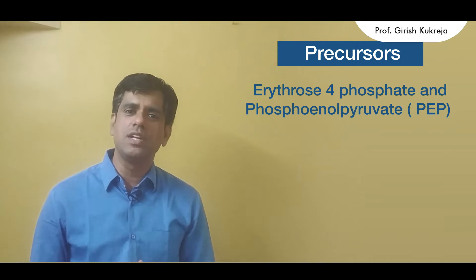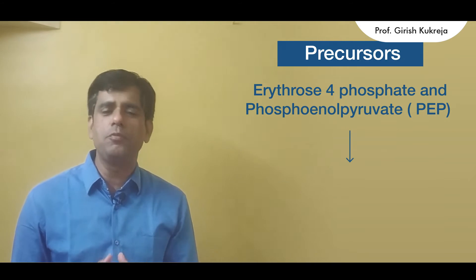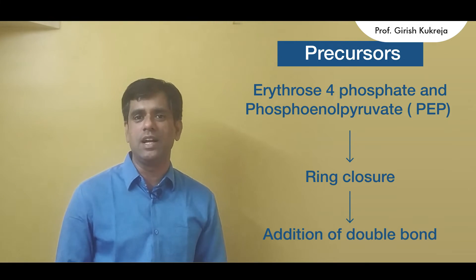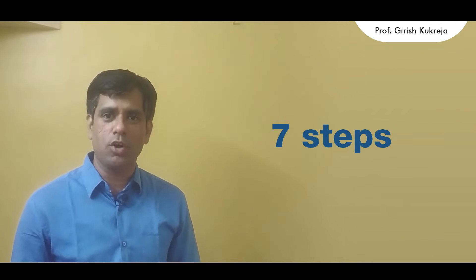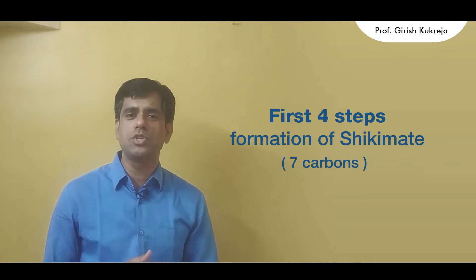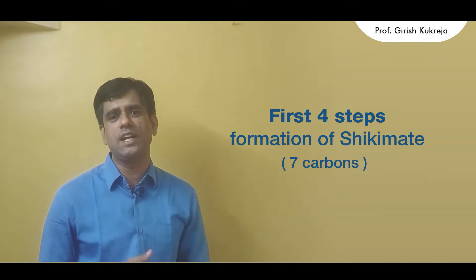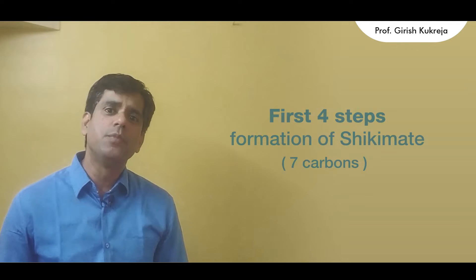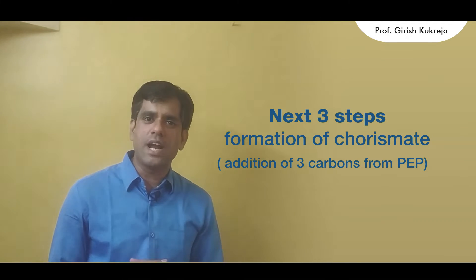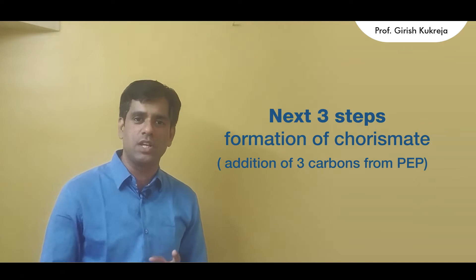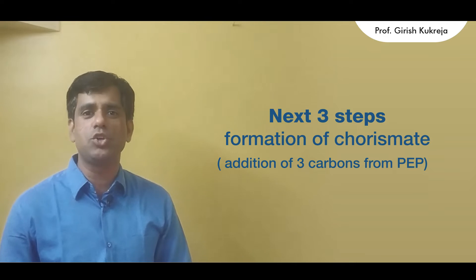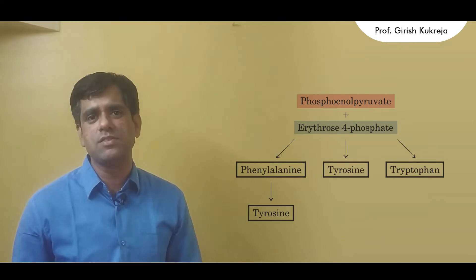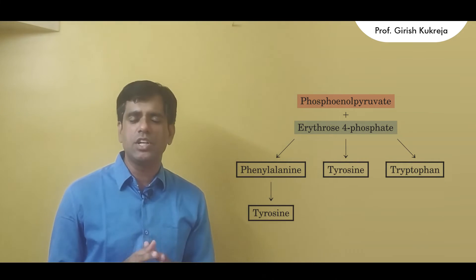The precursors for this synthesis are erythrose-4-phosphate and phosphoenolpyruvate. These two undergo ring closure followed by stepwise addition of the double bond. In the overall sequence of 7 steps in the formation of chorismate, the first 4 steps result in the formation of shikimate, where PEP and erythrose-4-phosphate combine to form this 7-carbon intermediate. Shikimate then undergoes 3 consecutive steps, including addition of one more phosphoenolpyruvate, to form chorismate. Chorismate forms the first branch point of this pathway, with one branch leading to tryptophan and the other to phenylalanine and tyrosine.